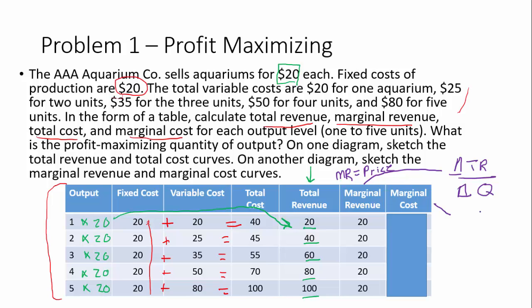The marginal cost is going to be the same kind of setup: the change in total cost divided by the change in quantity. Quantity is easy for this one because we're only adding one unit at each level. So what we have to figure out is the change in cost as we go from zero units to one, one unit to two, two units to three — the answer comes in between as we change.